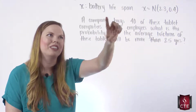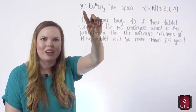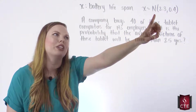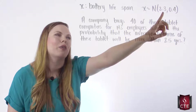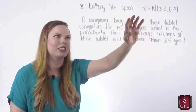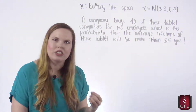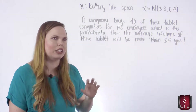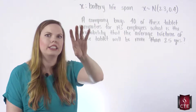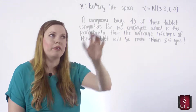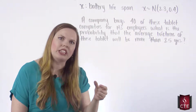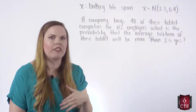X, our variable, is the battery lifespan. We know that X is normally distributed with a mean of 2.3 and a standard deviation of 0.4. That notation tells us X is normally distributed and gives us the mean and standard deviation. So now we're looking at the probability that X is greater than or less than one particular value.